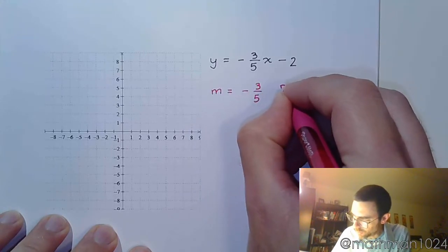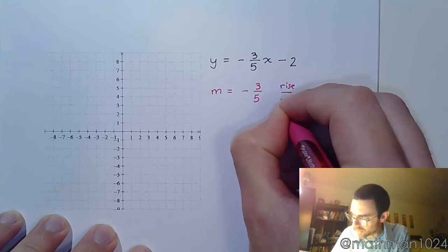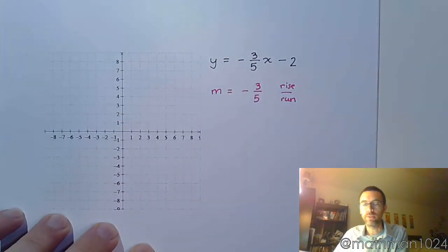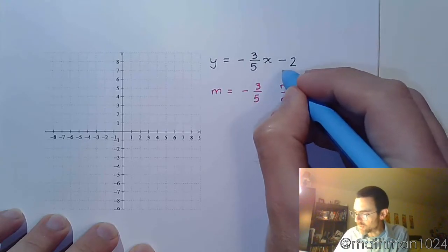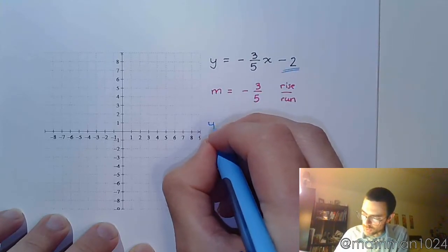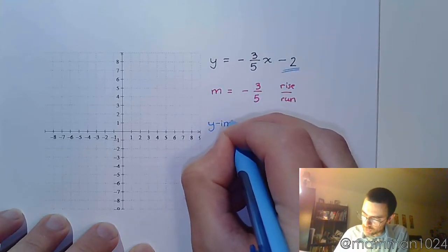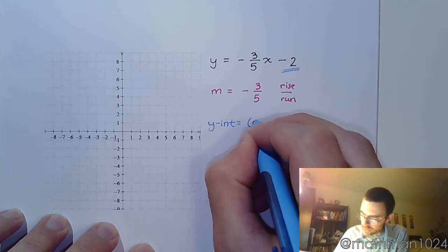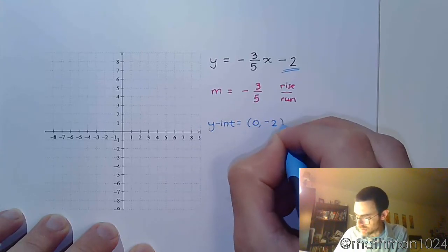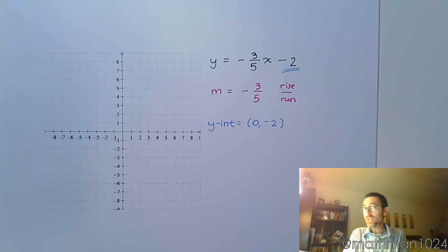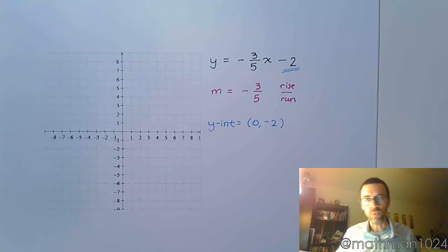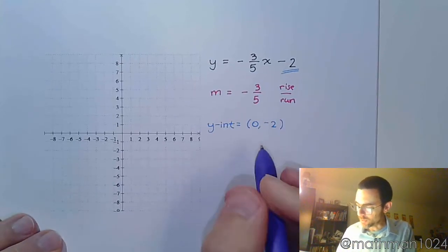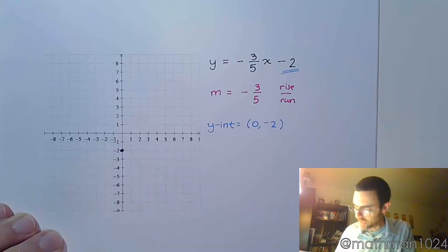My slope is negative 3 over 5. For a slope, we like to see this as rise over run. The constant that we have at the end corresponds to our y-intercept, which gives us the ordered pair (0, -2). The y-intercept is a point, and points must be given as ordered pairs. When we graph, we always start with the y-intercept at (0, -2).